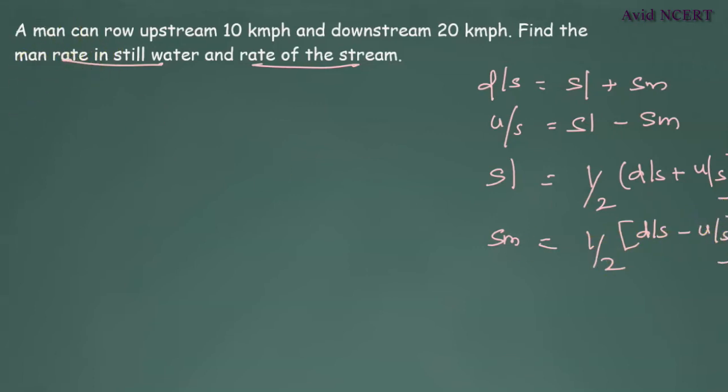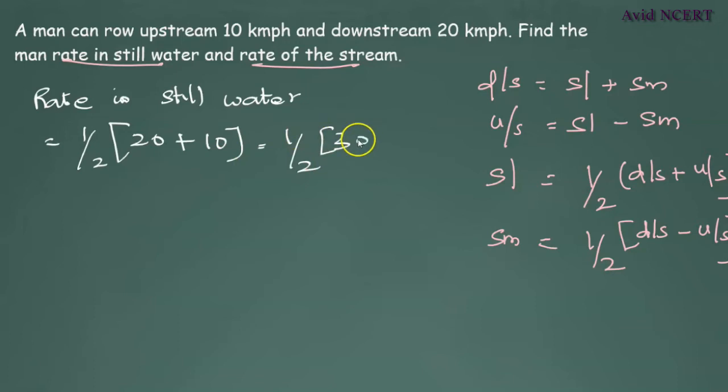Now to find the rate in still water, substitute the values in the formula. Rate in still water equals one-half times 20 plus 10, which equals one-half times 30, which is 15. So the rate in still water is 15 km per hour.